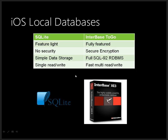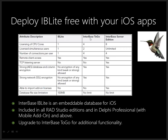InterBase comes in two flavors: IBLite and InterBase ToGo. IBLite is embeddable inside your iOS device and is included in your RAD Studio editions. With Delphi Professional and the mobile add-on, you get a license key to embed InterBase Lite. If you need a free embeddable database, the database is less than 100MB, you only need one simultaneous user, and you don't need encryption, then IBLite free is a great option.